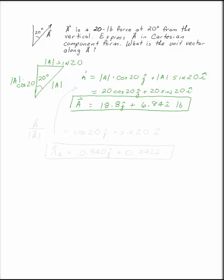Now to find the unit vector of any vector, you take the vector itself and divide by its magnitude. If you look at this form of A right here, if we divided that by 20, what you'd end up with is cosine 20 J plus sine 20 I.